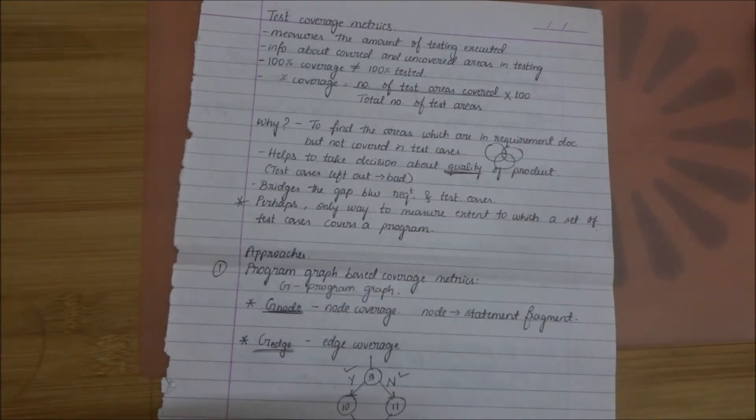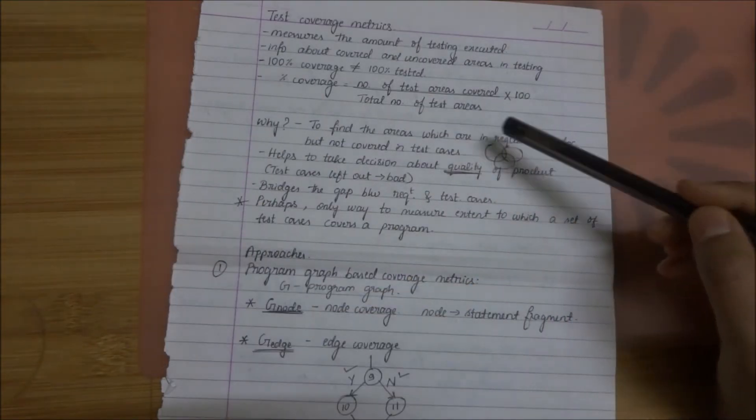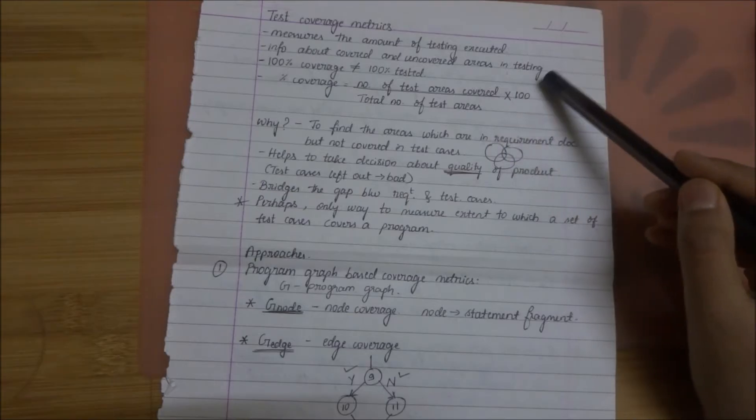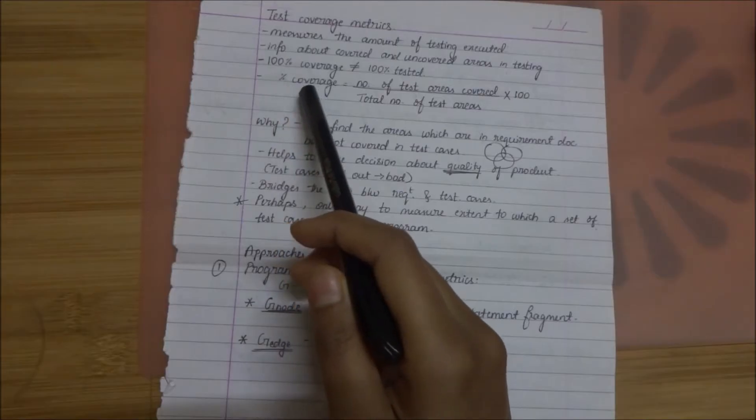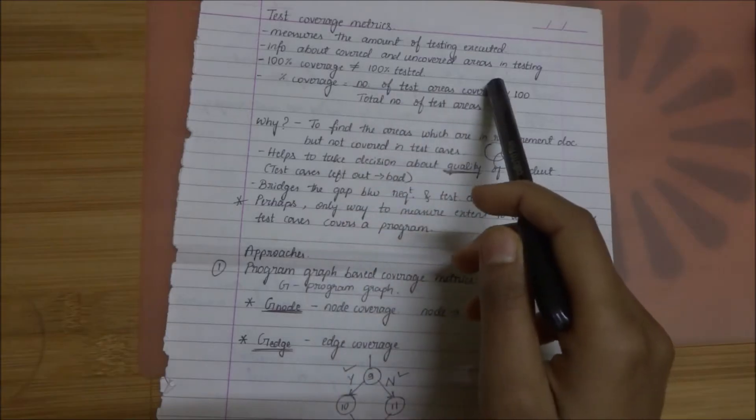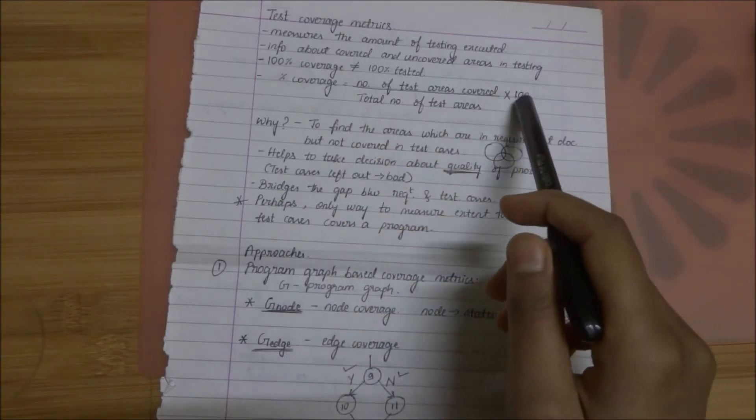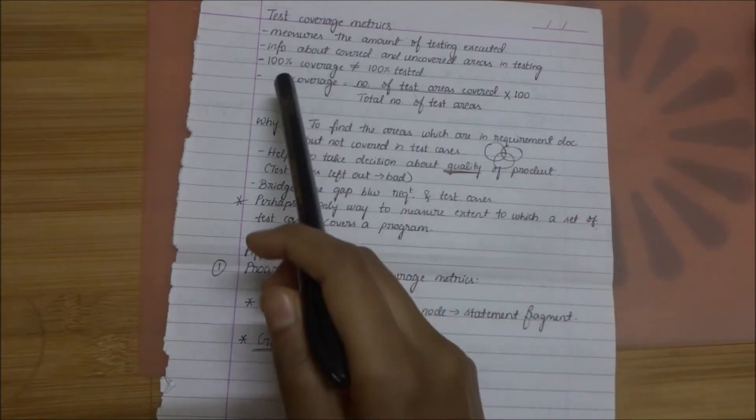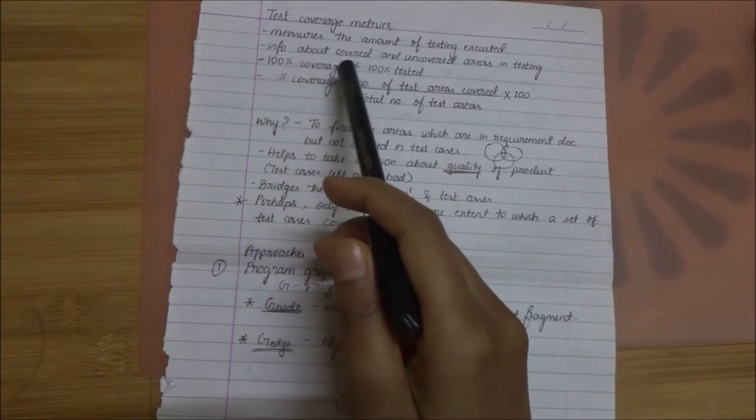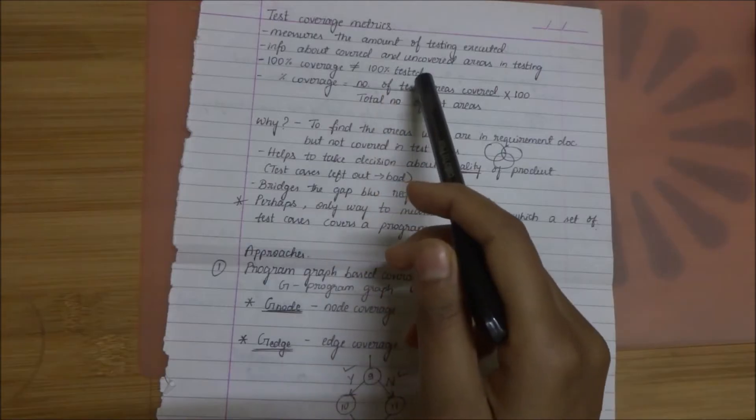This also gives information about the covered and uncovered areas in testing. The percentage of coverage is number of test areas covered by total number of test areas into 100. We should also note that 100% coverage does not mean that it's 100% tested.